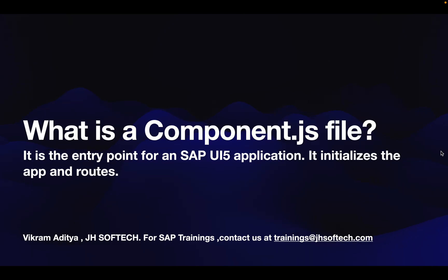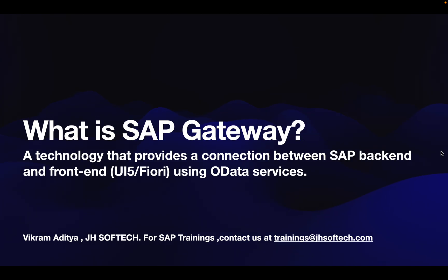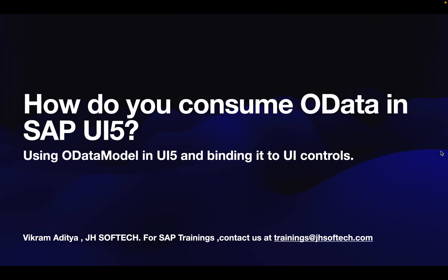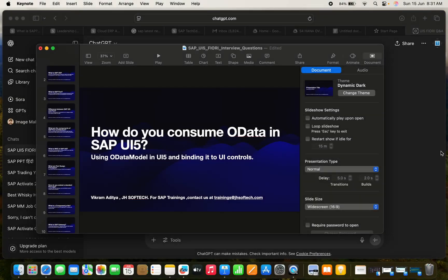What is a component.js file? It is an entry point for a SAPUI5 application — it initializes the application and routes. What is SAP Gateway? It is a technology that provides a connection between the SAP backend and frontend UI5 Fiori using OData services. How do you consume OData in SAPUI5? Using the OData model in UI5 and binding it to UI controls, we can make use of OData in SAPUI5.